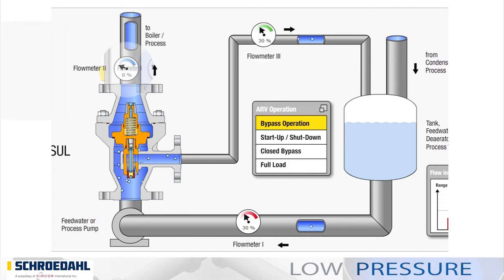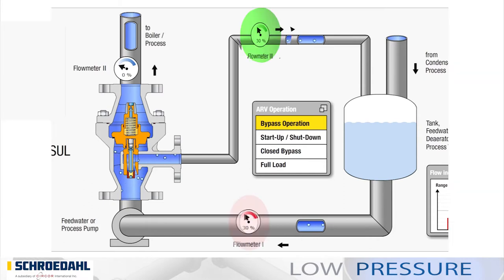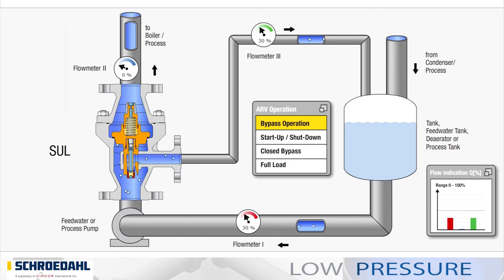Flow meter 2 displays 0% when no medium is being fed into the production process. The bypass of the automatic pump protection valve is in the fully open state. It feeds the medium through the valve to the tank and back to the pump circuit. Here, flow meter 1 and flow meter 3 show the same maximum flow rate value of 30%. The conical system, which is precisely adapted to the system requirements, closes the valve so that no medium is passed into the production process. Flow meter 2 shows 0%.